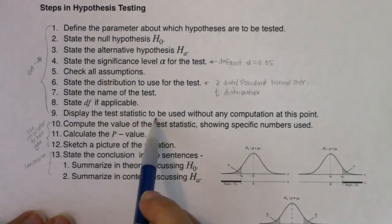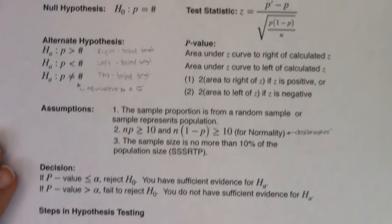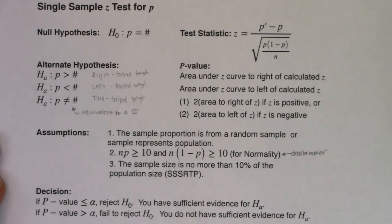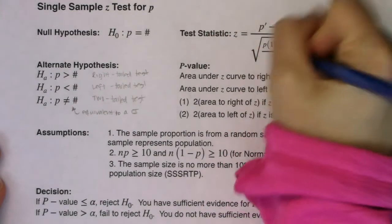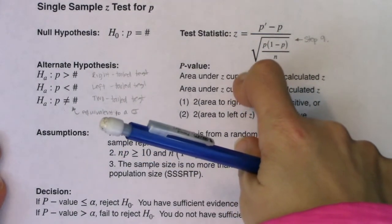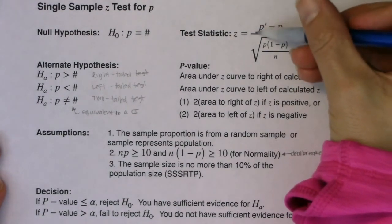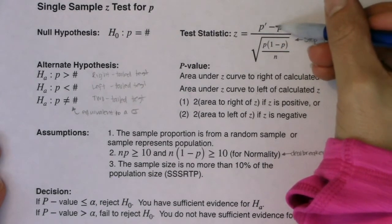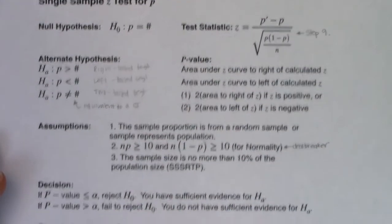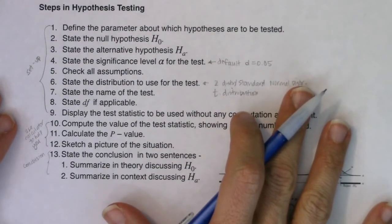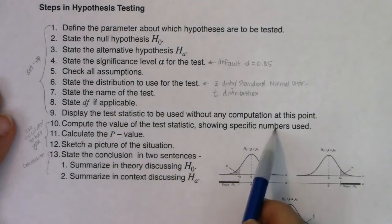Step nine: display the test statistic formula without any computations. Whatever formula I give you at the top of the page is quite literally step nine — you will copy this formula onto your paper. Step ten: plug in your numbers for your particular problem. You will tell me your sample proportion, your population proportion, and divide by the standard error of p(1−p)/n.